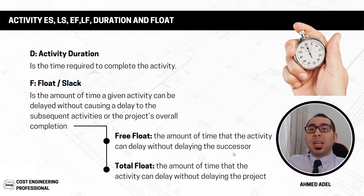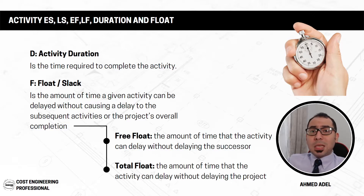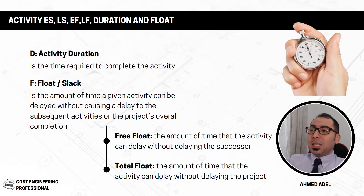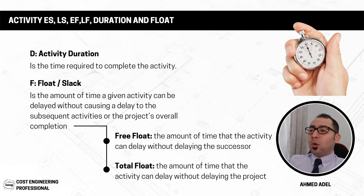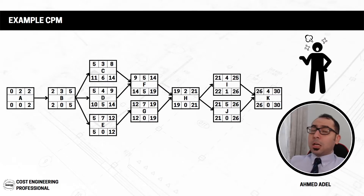Total float is the amount of time an activity can be delayed without delaying the project itself. So for any activity in your project — whether you have 100 or 200 activities — you'll find two numbers: the free float, which is delay tolerance before affecting the next activity, and the total float, which is delay tolerance before affecting the overall project completion.